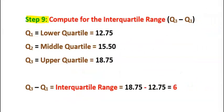Step 9: compute for the interquartile range. From step 6, the lower quartile is 12.75. From step 7, the middle quartile is 15.5. From step 8, the upper quartile is 18.75. The interquartile range is the upper quartile minus the lower quartile, which is 6.